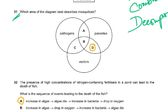Question 31: which area of the diagram best describes mosquitoes? Well, they are parasites and they are vectors. They are not pathogens, they don't cause the disease. The disease is caused by the plasmodium, which is a protozoa.